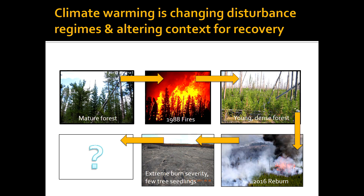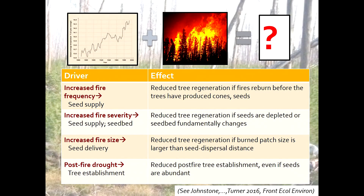What does that mean for the future of the forests in that area or the northern Rockies? We need to understand the mechanisms underpinning these changes. The changes in disturbance alter that legacy — the availability of seed, whether it's still there after the disturbance, whether the patches are so large that seeds can't get there to recover the forests. And then we're also changing the climate, so the conditions for regrowing and establishing trees are changing too.